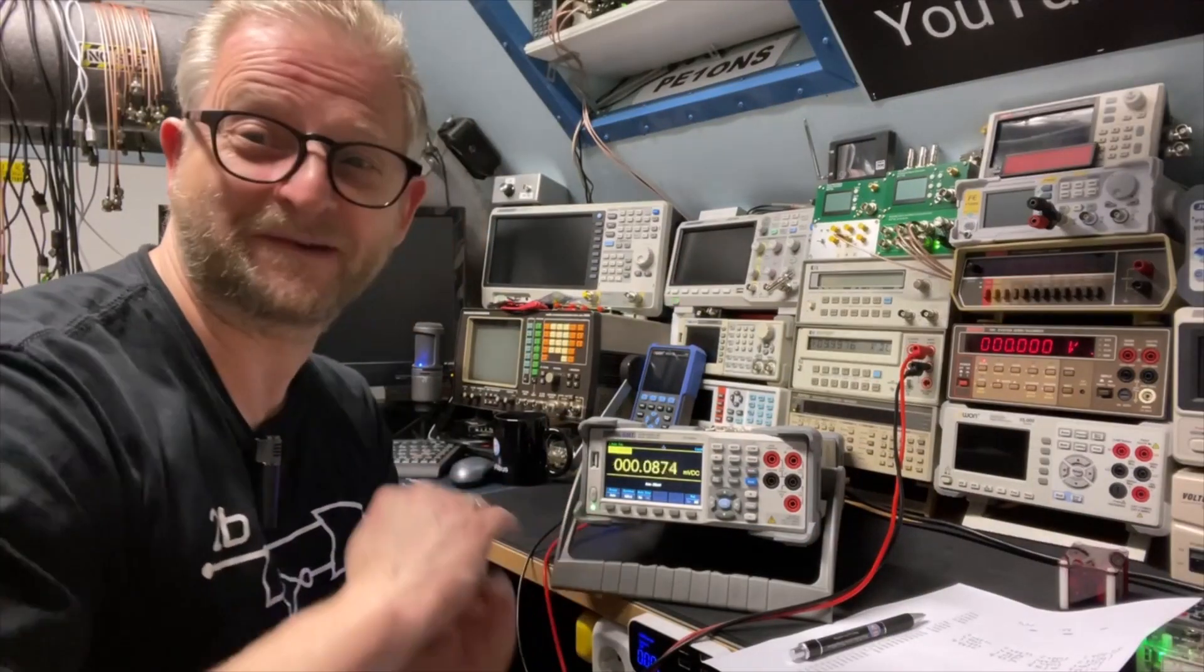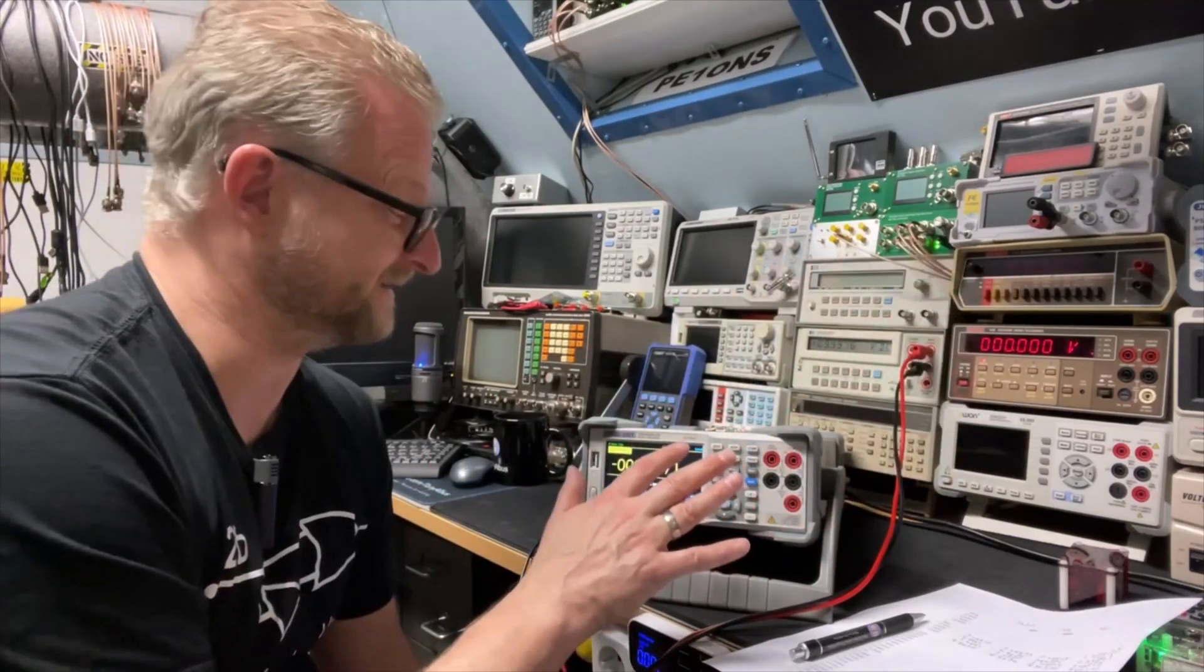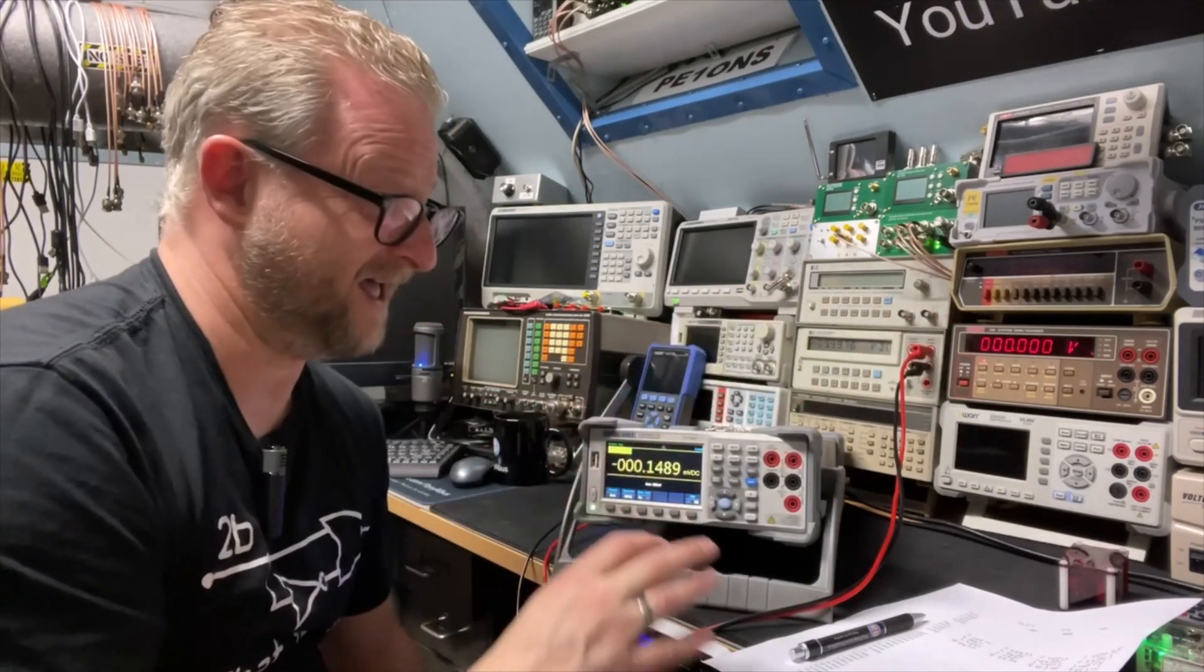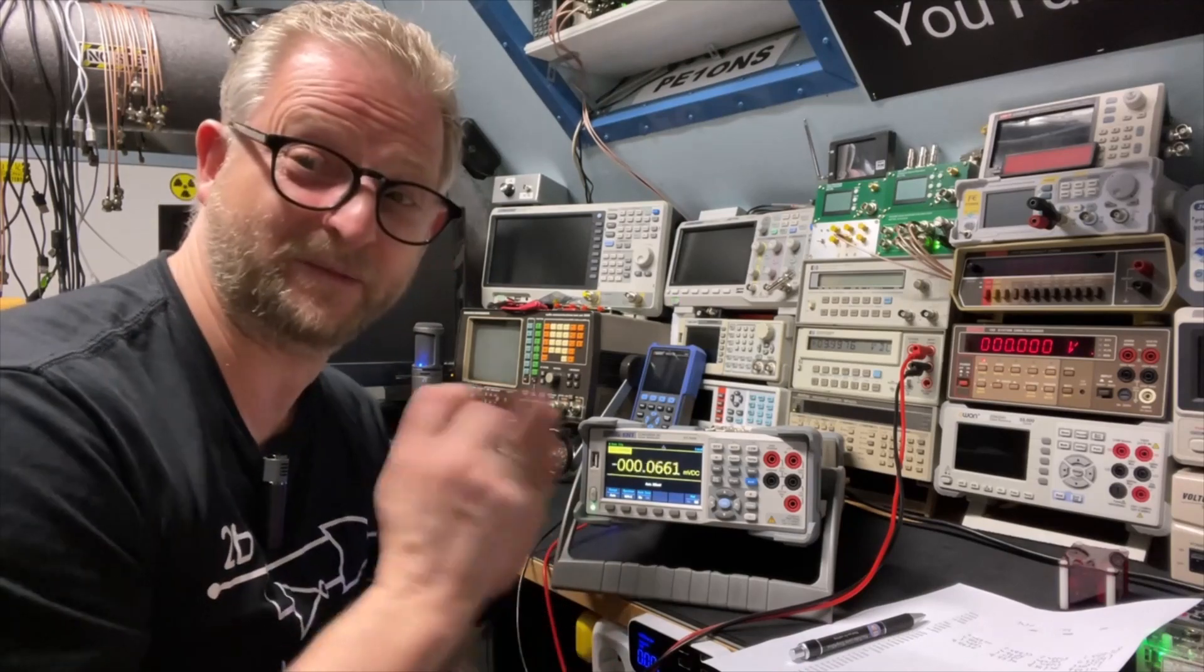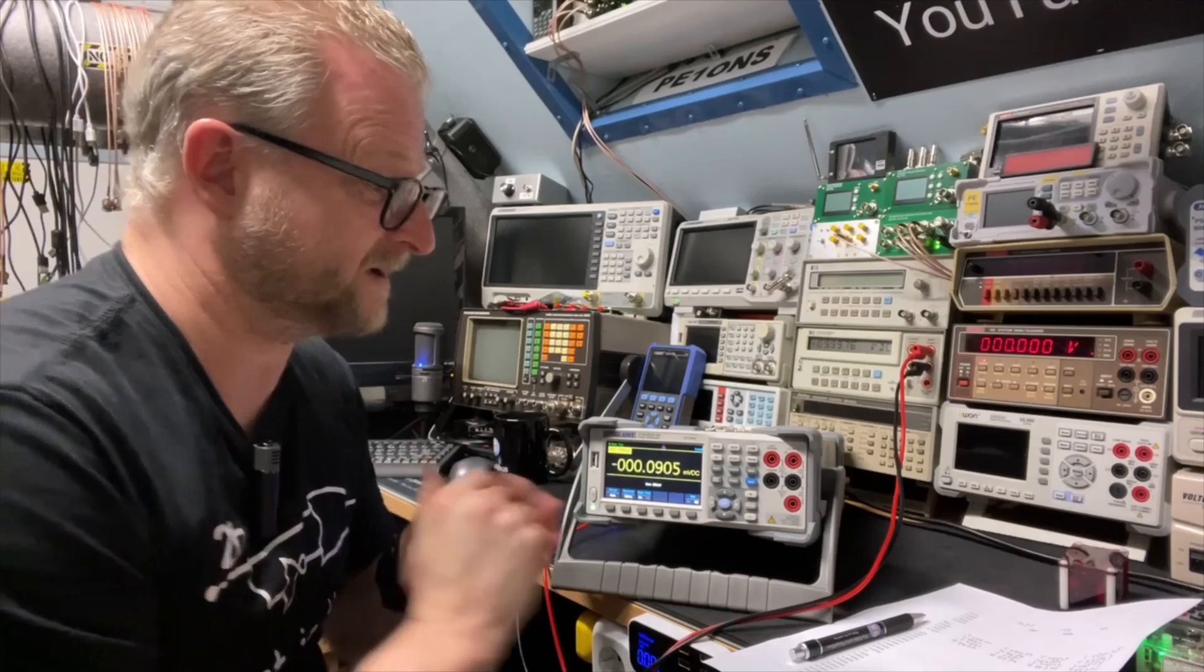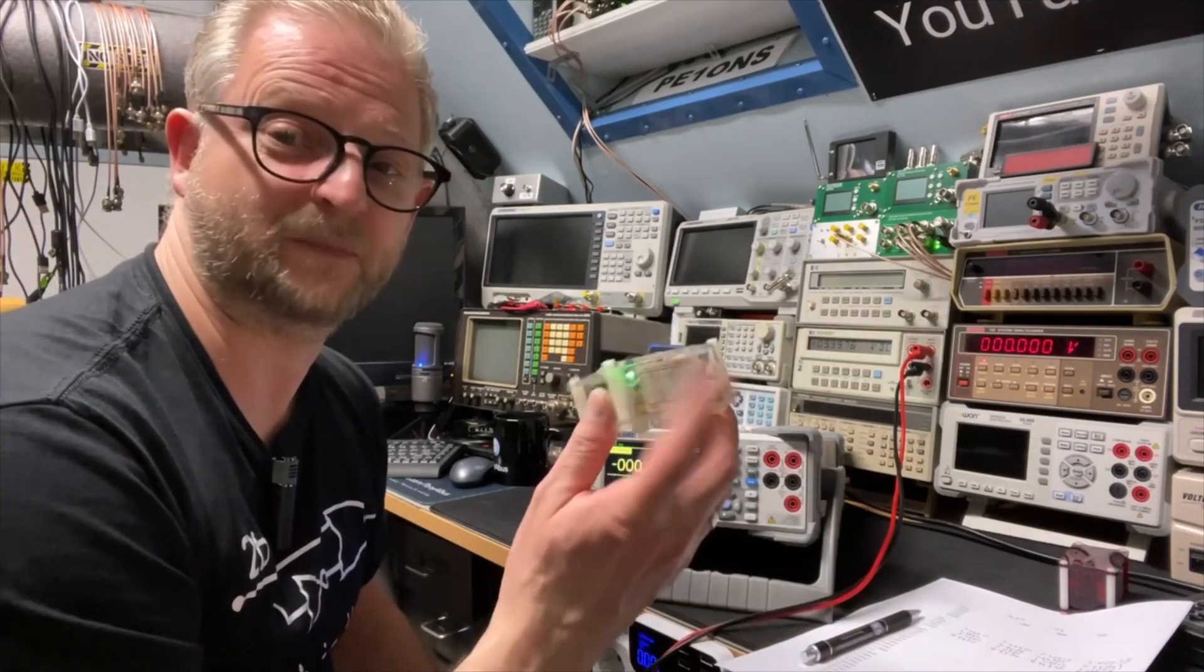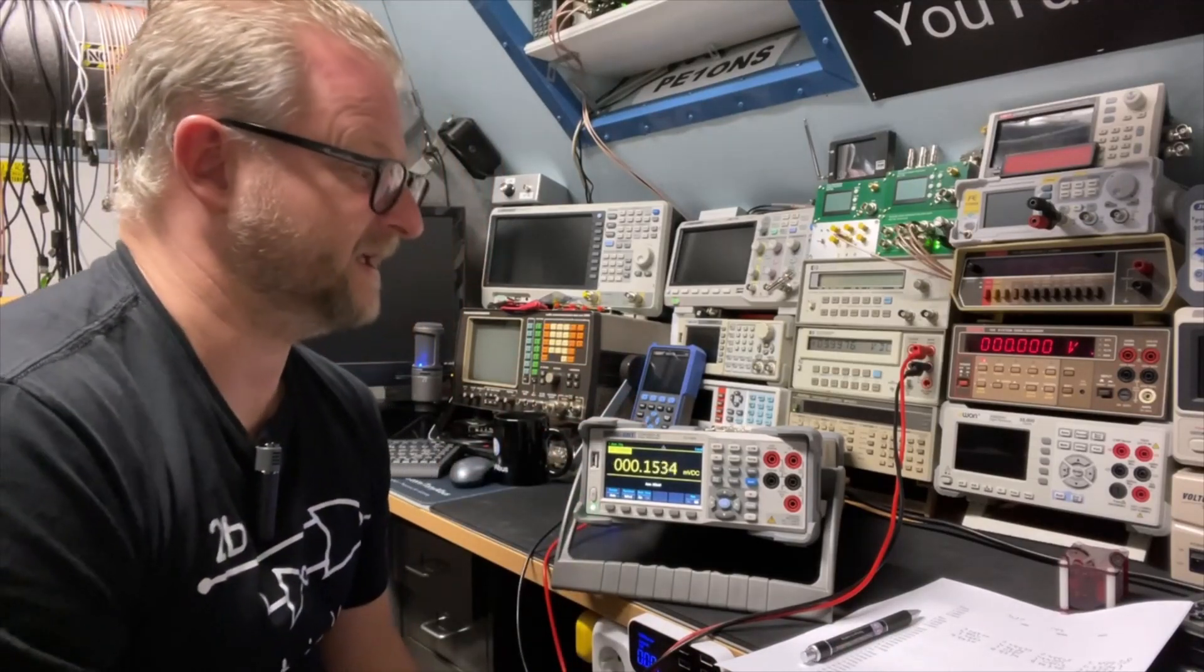Usually you never want to do this because you need to trust one meter, because all the meters are going to display a little bit different. But these and this one are actually quite close together so I really feel good about it. It only confirms that the sticker is good on this one. So now I will also write down the one that I replaced the IC myself because I blew it.